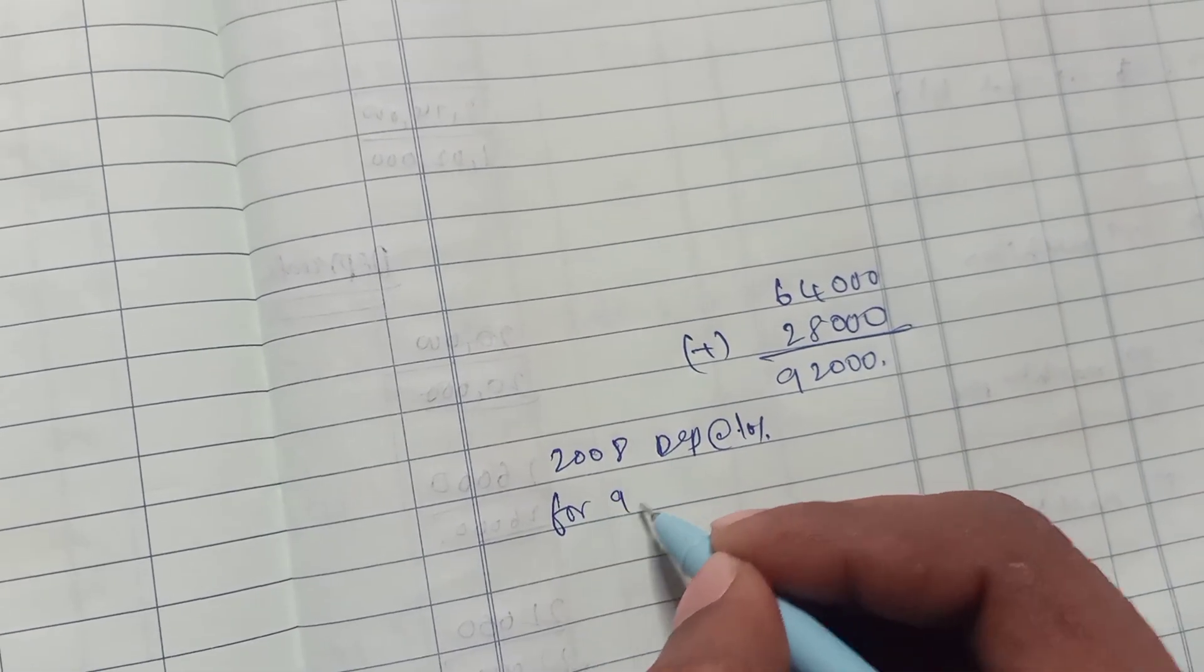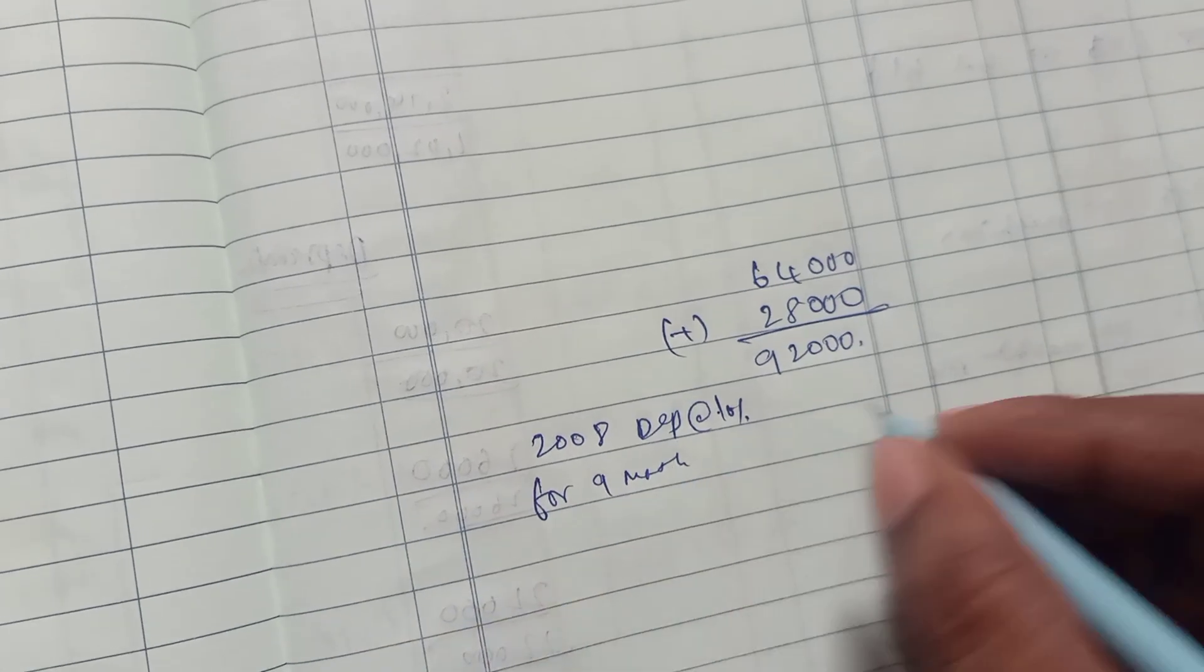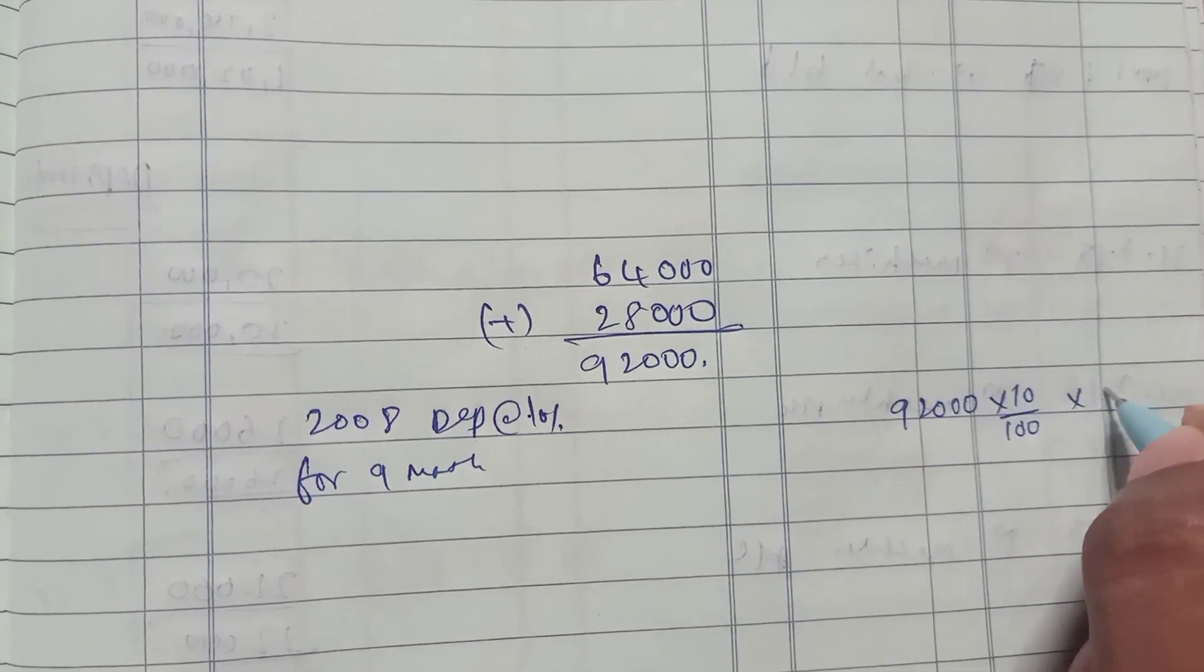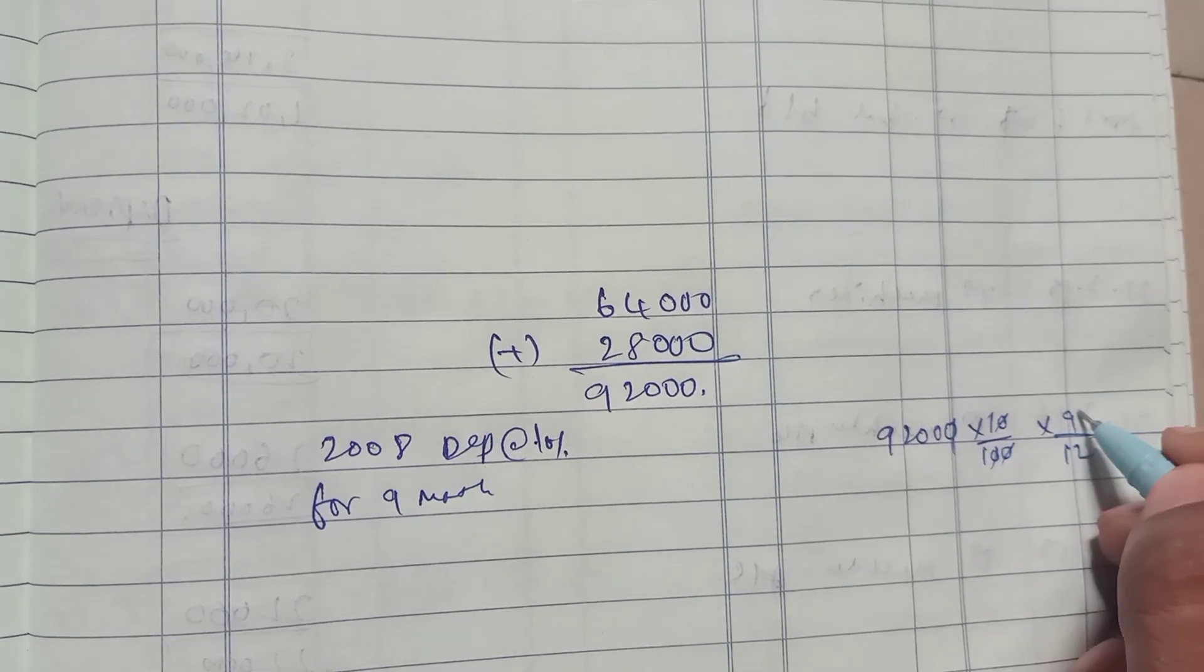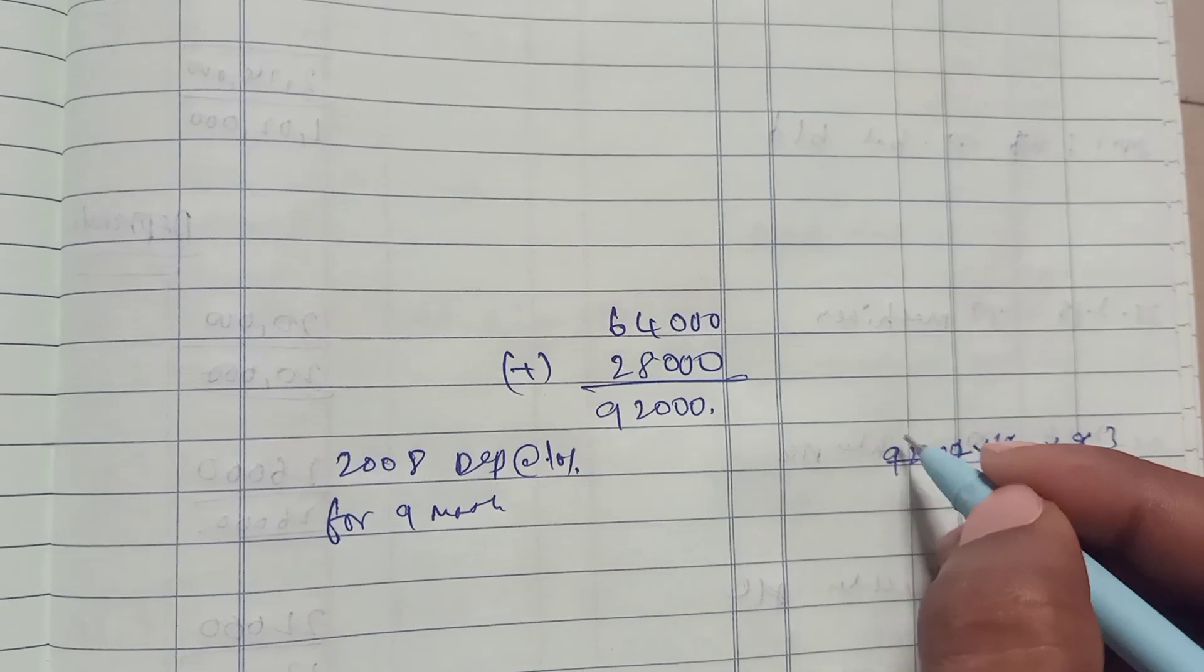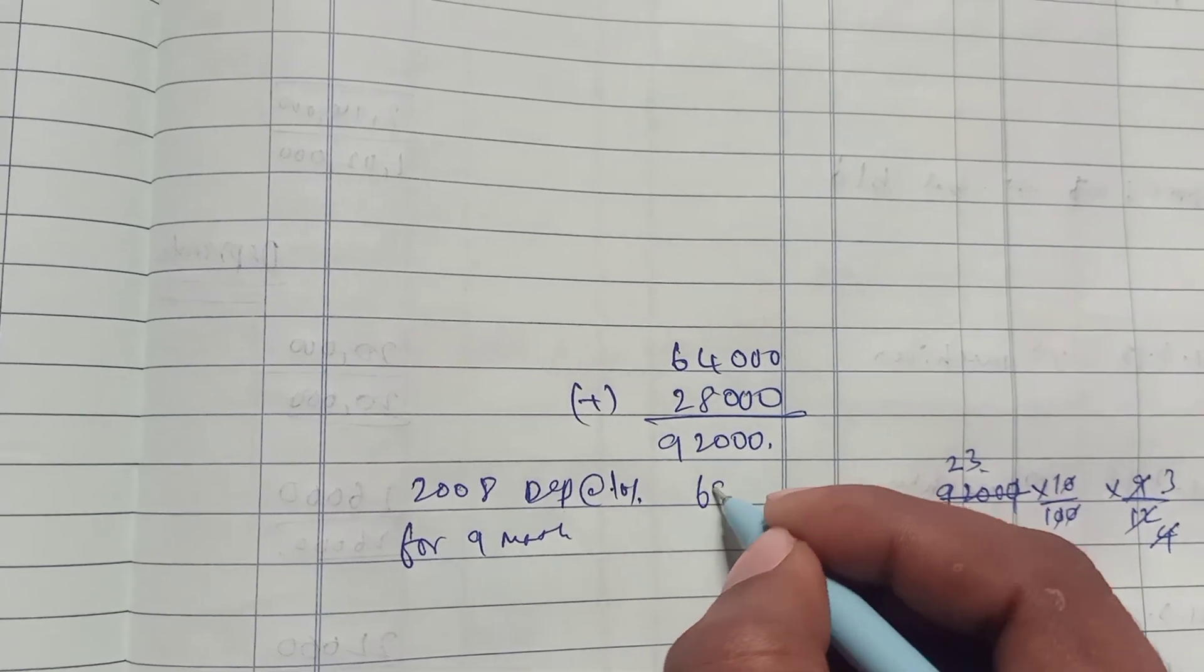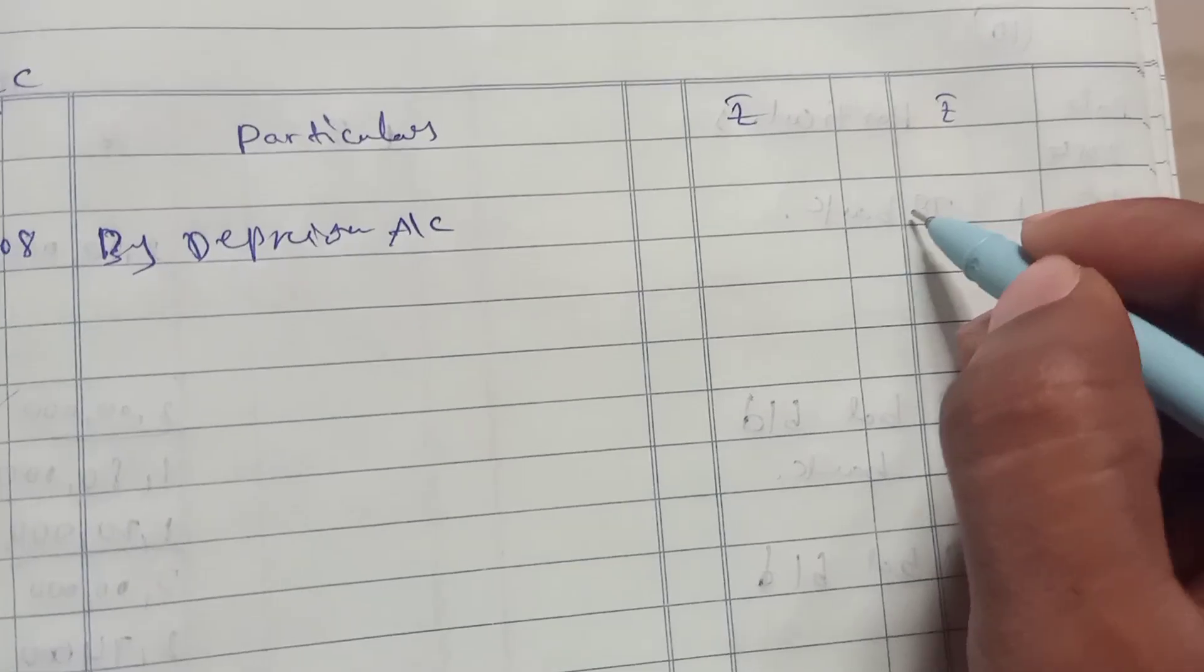Calculate $92,000 times 10% equals $9,200 divided by 12 times 9. Three times 2,300 is 6,900. So 23 times 300 is 6,900. First year depreciation is 6,900.